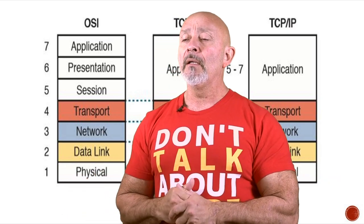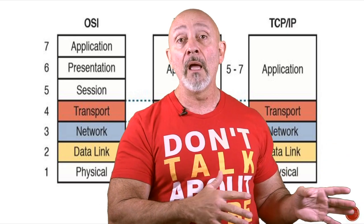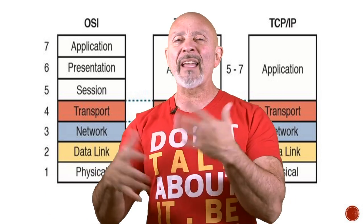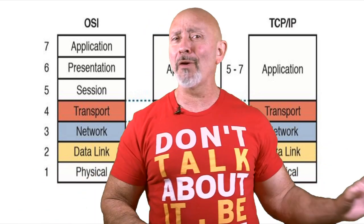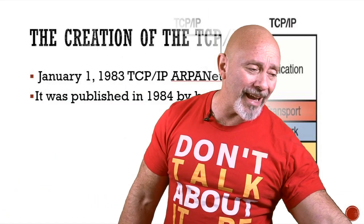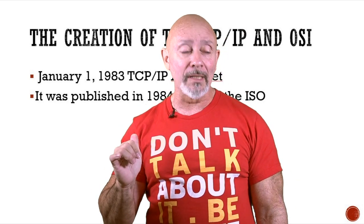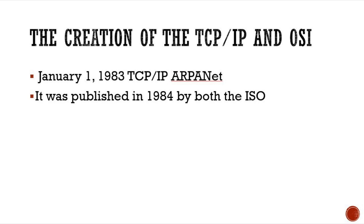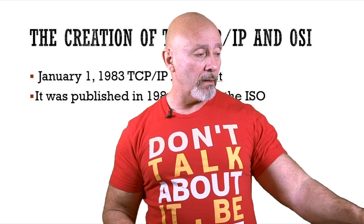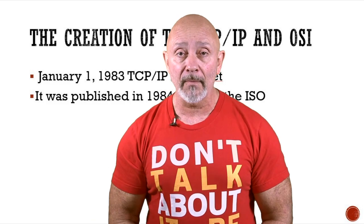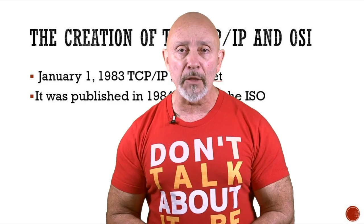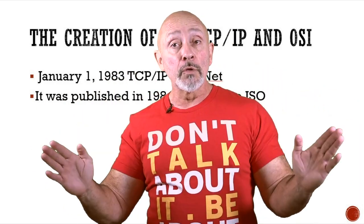Engineers today feel more comfortable with the TCP/IP model. I researched it and I found that engineers haven't heard of the OSI — which surprised me because it's in every book out there. This slide shows that January 1st, 1983, the TCP/IP model came from ARPANET, and 1984 was the OSI model brought out by the ISO. So the newer one is actually the OSI, not the TCP/IP model. Know both — they're two separate entities, two different models.